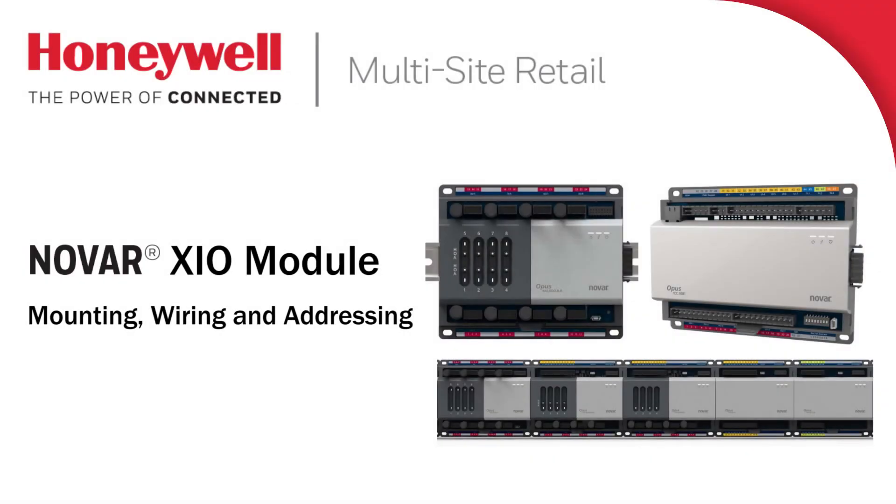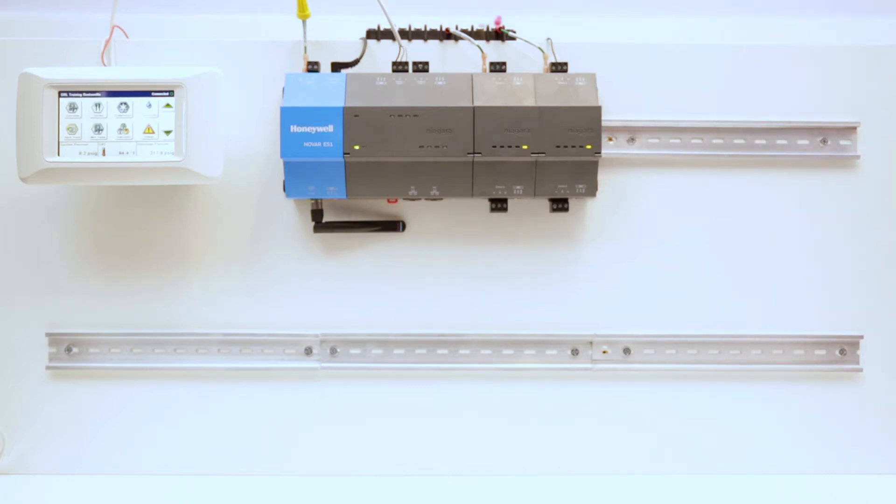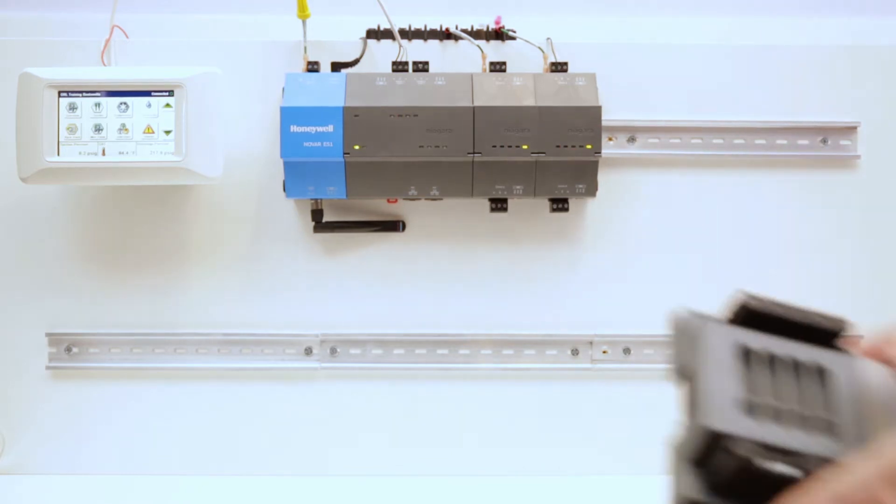Mounting XIO modules is very straightforward. Begin by mounting a 35mm wide DIN rail horizontally. The DIN rail offers two advantages.